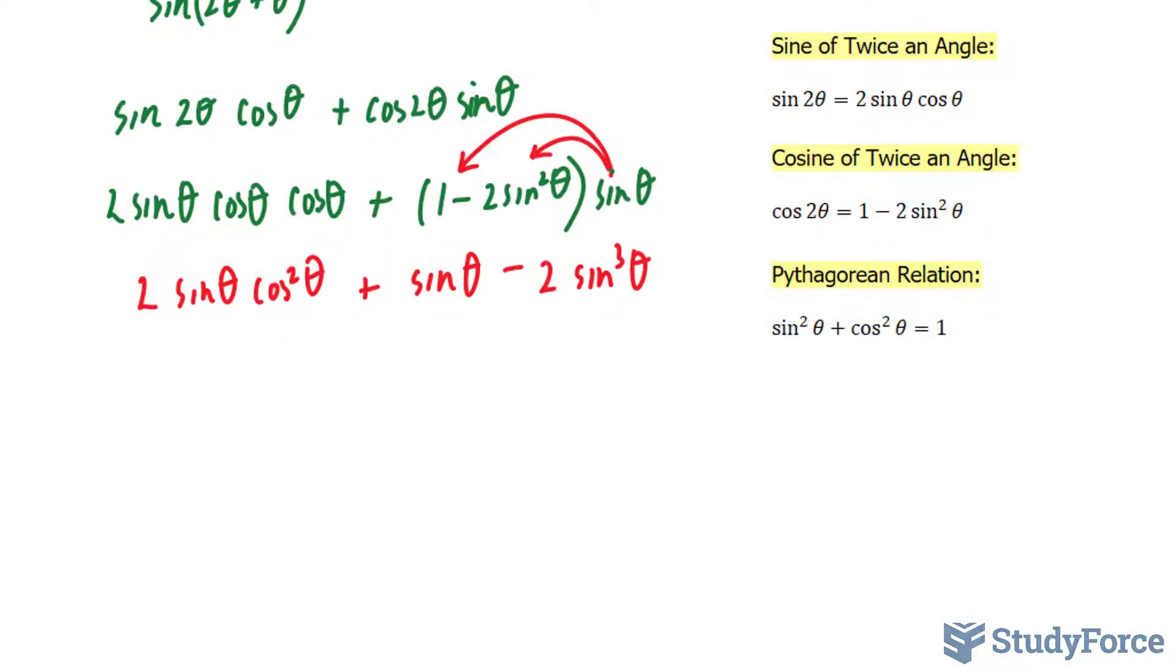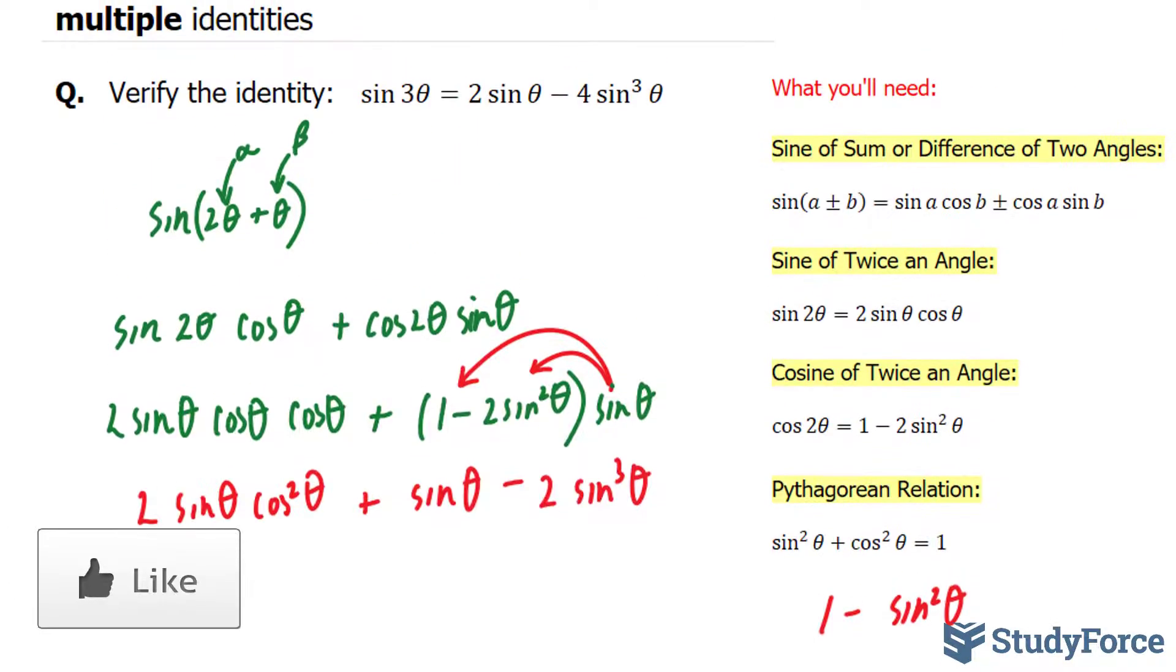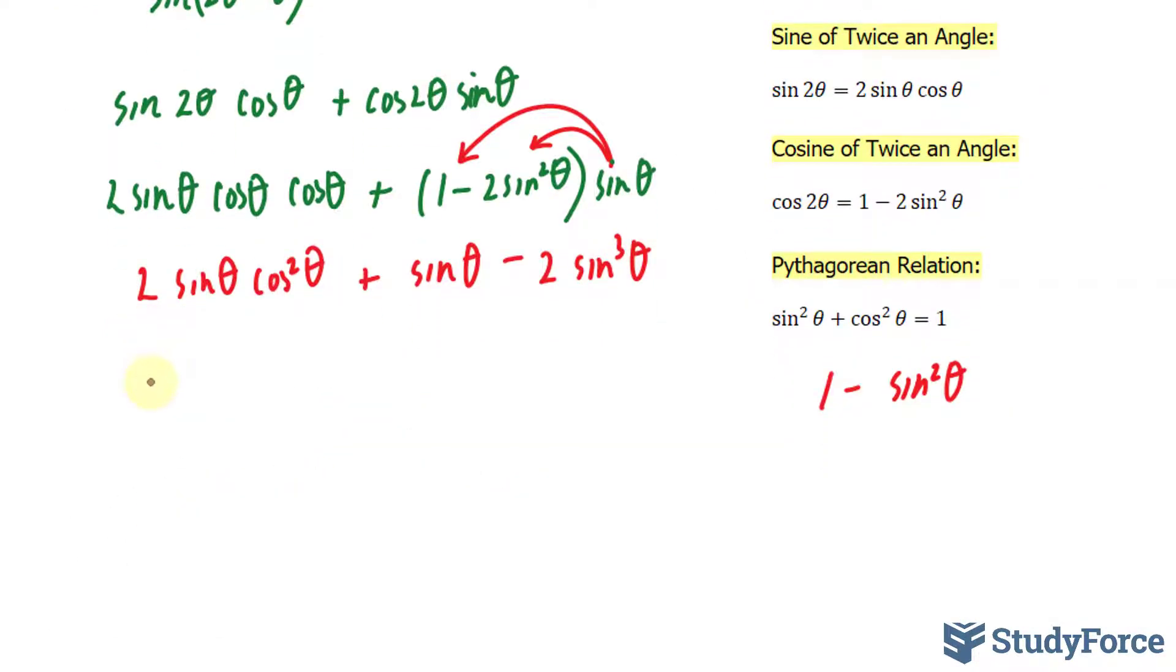The next thing that I'll do is manipulate the Pythagorean relation to replace cos²θ with 1 - sin²θ. Remember our goal: our goal is to have sine on the right side. So far we have this cosine and it doesn't belong. So we have 2 times sin θ. This is being replaced with (1 - sin²θ) + sin θ - 2 sin³θ.